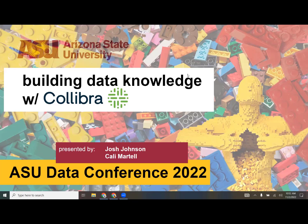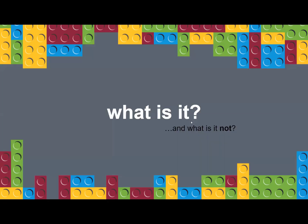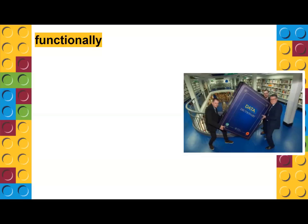So what is Collibra? Functionally, it's a metadata repository — metadata being data about data. Our warehouse, ODS, and ADB contain data, and we're just recording information about that data. We're going to source basic metadata from the databases themselves, and then add on enriched metadata — user-provided information that doesn't actually exist in a structured format anywhere. It's picking the brains of subject matter experts.